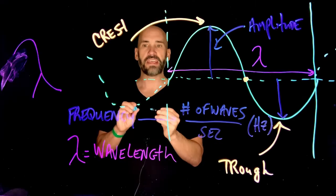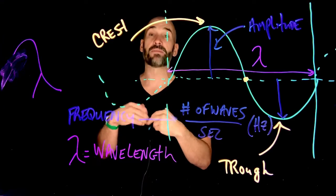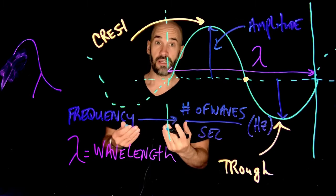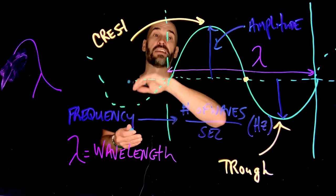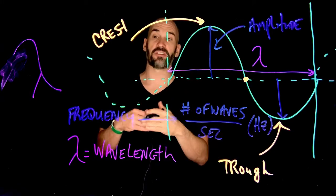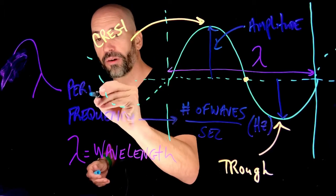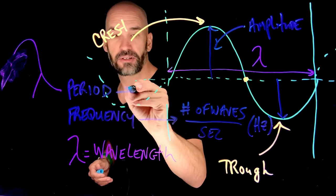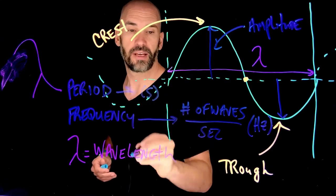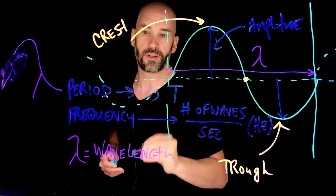And frequency is very intimately connected with period, which is how long it takes one full wave to pass. It's actually a time. So the period is the time it takes for one full wave to pass, and that's measured in simply seconds. And the symbol is T.